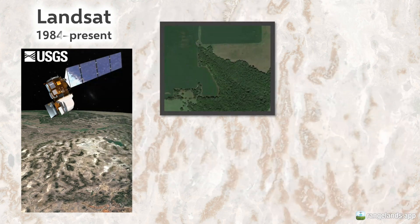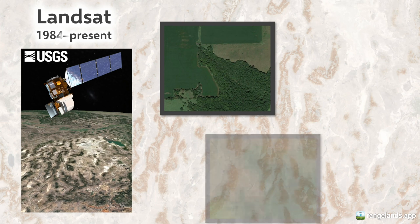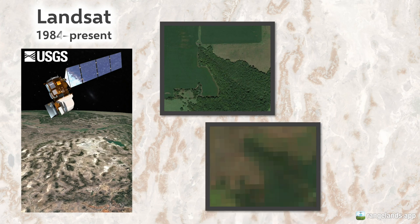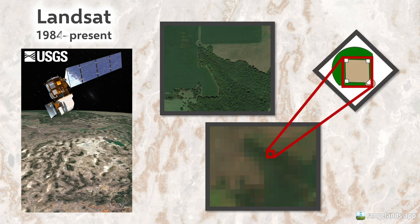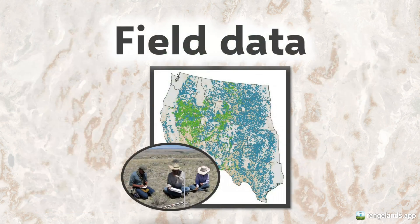Landsat is considered a moderately high-resolution satellite. It has 30-meter spatial resolution, which means that each pixel in the image equates to 30 by 30 meters on the ground — roughly the size of a baseball diamond. Landsat offers powerful data, but it doesn't tell us about the vegetation types that are on the ground, and for that we need field data.